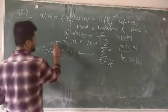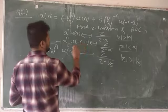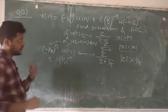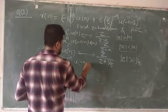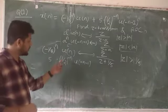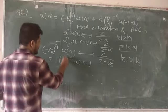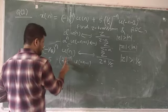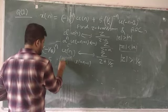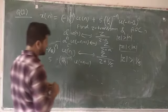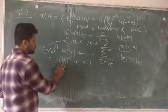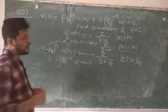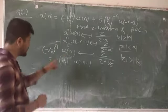For the term 5·(1/2)^(−n)·u(−n−1): note that (1/2)^(−n) = (2^(−1))^(−n) = 2^n. So this term is 5·2^n·u(−n−1). Since we know −a^n·u(−n−1) transforms to z/(z−a), but here we have a plus sign, so the Z-transform gets a minus sign: −5z/(z−2).